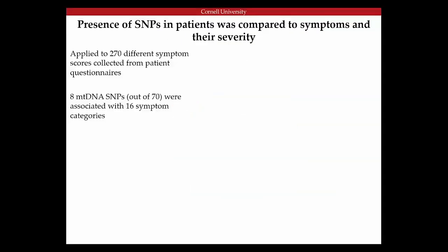We looked at 270 different symptom scores that were collected from patient questionnaires. This was an important aspect of the work done by the physicians for the Chronic Fatigue Initiative. They collected a lot of information from the patients, so we're very grateful that they were willing to fill out those forms. That allowed us to identify 8 mitochondrial DNA SNPs out of 70 total that were associated with 16 symptom categories. I'm going to give you just two examples from two of the SNPs.